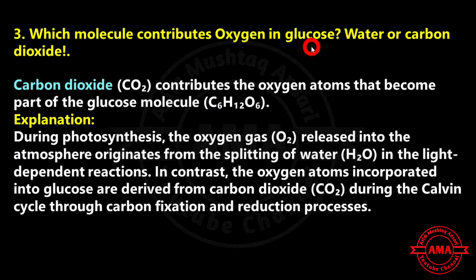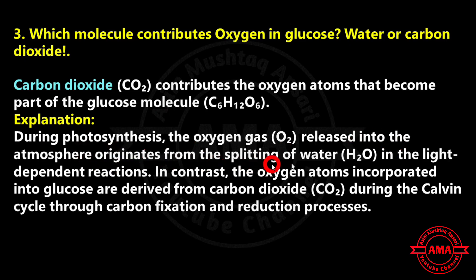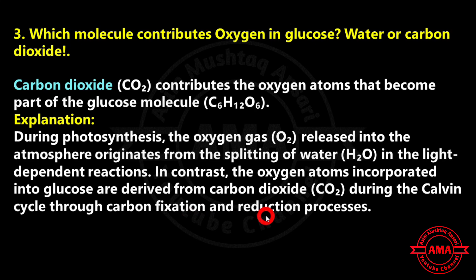At the same time, carbon dioxide is reduced as it gains electrons and hydrogen ions to form glucose. Thus photosynthesis involves the movement of electrons from water to carbon dioxide, with light energy driving this electron transfer. Next: which molecule contributes oxygen in glucose — water or carbon dioxide? Carbon dioxide contributes the oxygen atoms that become part of the glucose molecule. The oxygen gas released into the atmosphere originates from the splitting of water in the light-dependent reaction.